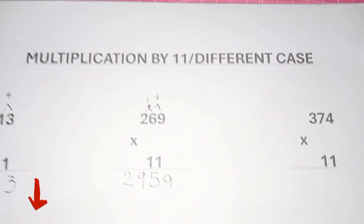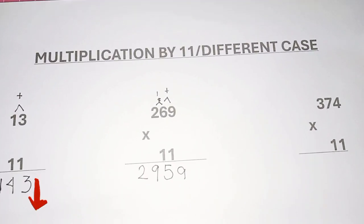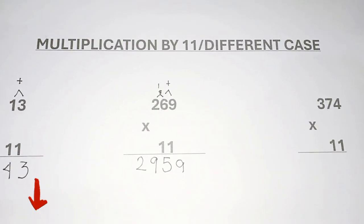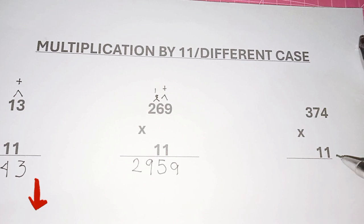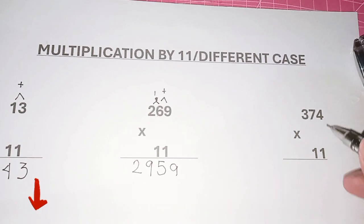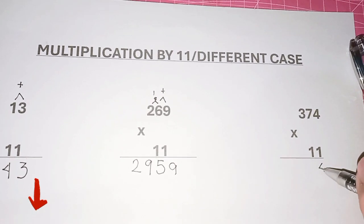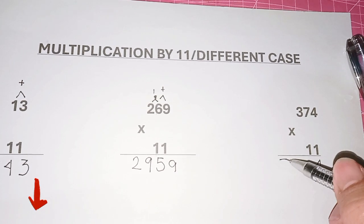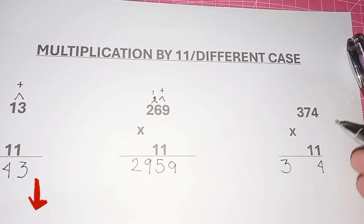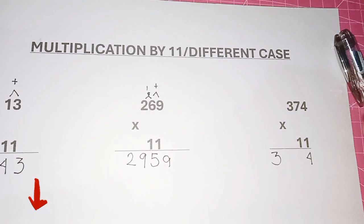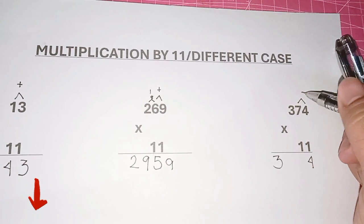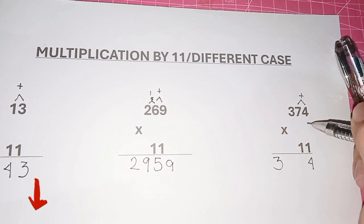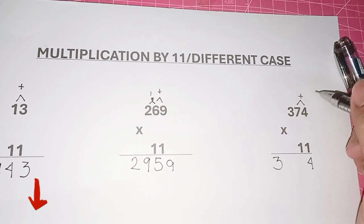Another case is 374 times 11. This is different from the previous examples. Copy the four and then the three. Next, add seven plus four, which gives 11.